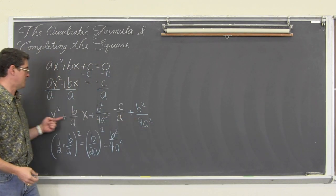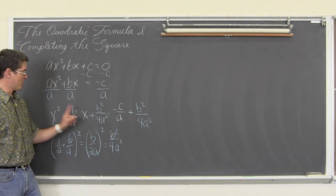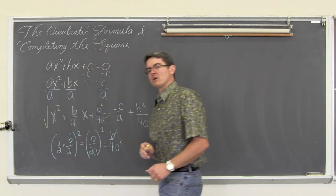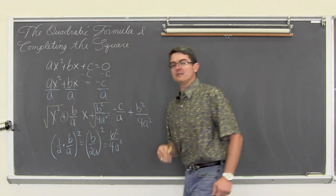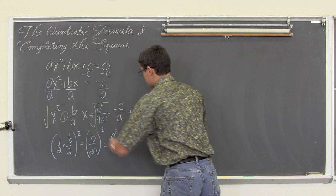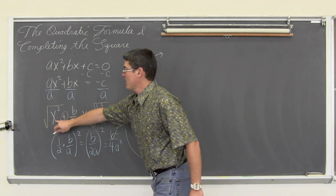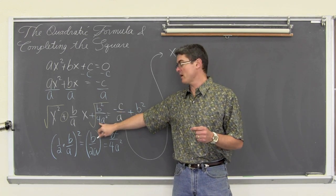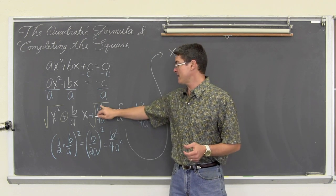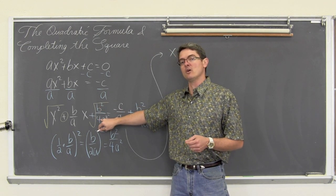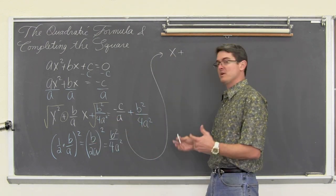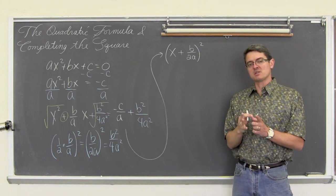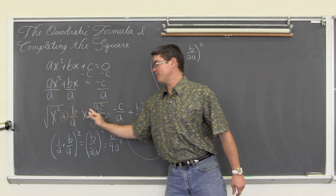Here is where we stand at the moment. When you complete the square, you set up a perfect square trinomial that is factorable by taking the square root of the first term, the square root of the last term, and keeping the sign of the middle term. So the left hand side factors to x plus b over 2a, and that binomial is squared. We are just applying the memorization pattern for factoring a perfect square trinomial.